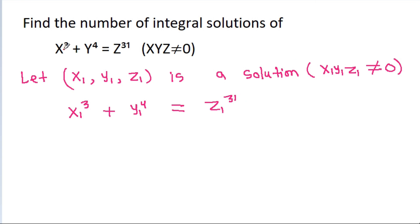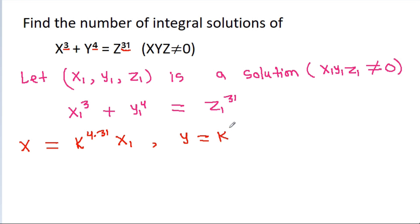The powers in the equation are 3, 4, and 31. So if we take x equal to some constant k^(4×31) · x1, y equal to k^(3×31) · y1, and g equal to k^(3×4) · g1,